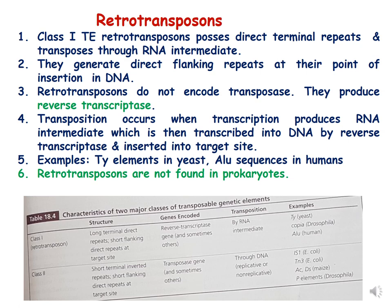Looking at the characteristics of the two major classes of transposable genetic elements from the textbook: class 1 retrotransposons have long terminal direct repeats and short flanking direct repeats at target sites. The genes encoded by class 1 retrotransposons include reverse transcriptase and sometimes others, and transposition occurs via an RNA intermediate. Examples are TY in yeast, copia in Drosophila, and LINE in humans.